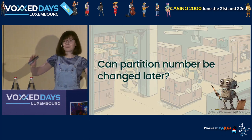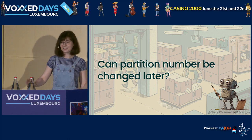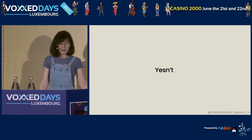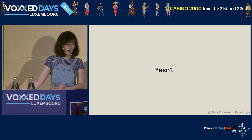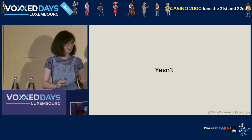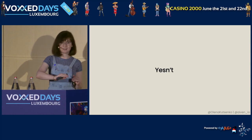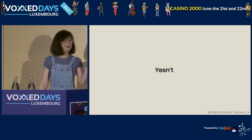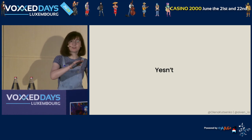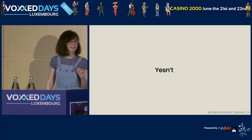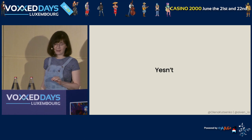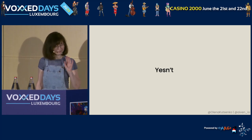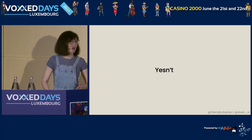So you spent some time and decided on the number of partitions. Now the question is: can you change the number of partitions later? The answer is yes and no. It is impossible to decrease the number of partitions for an existing topic. However, you can add more partitions. Whether adding more partitions is a good idea depends on how exactly you distribute data across those partitions, and in particular whether you are using keys. If you are using keys, by adding more partitions you add more headache for yourself — we'll see that example later.